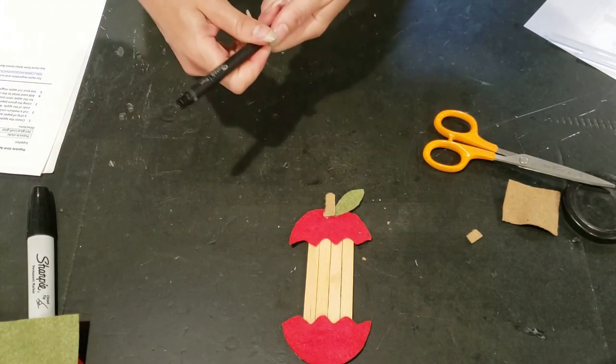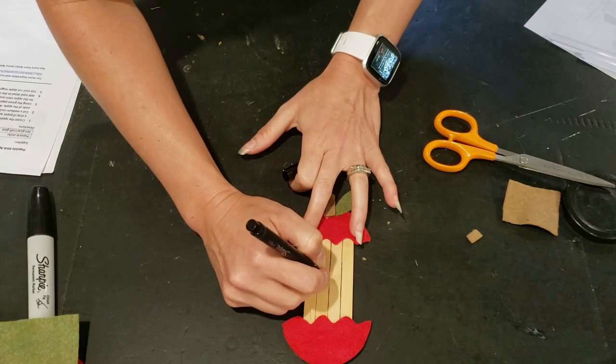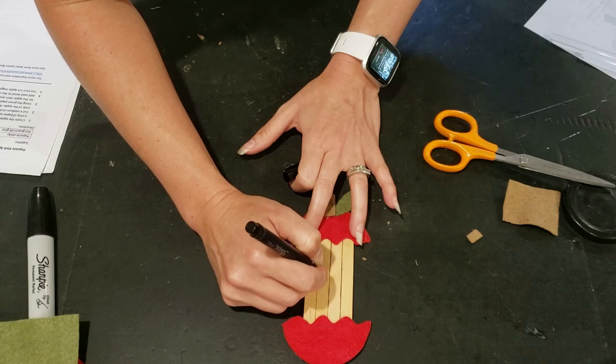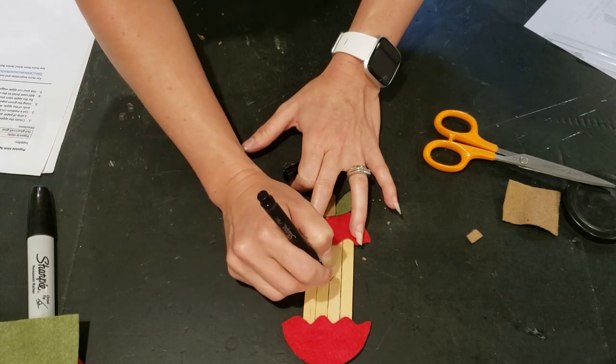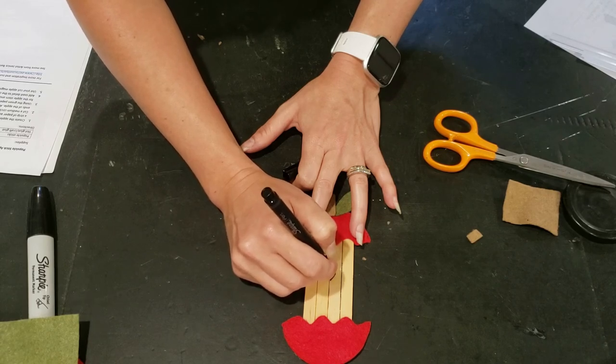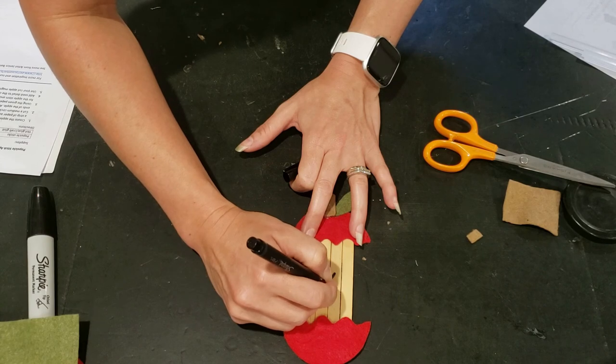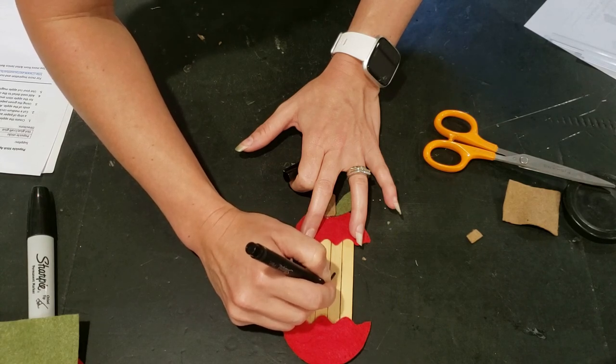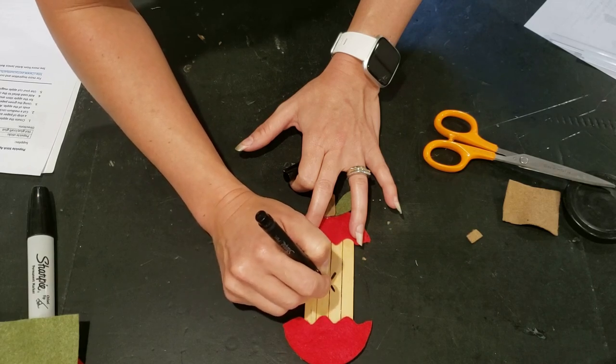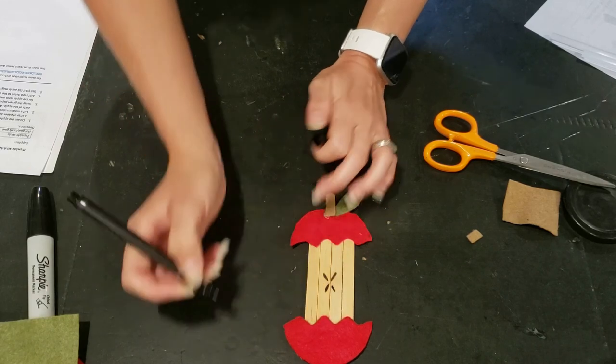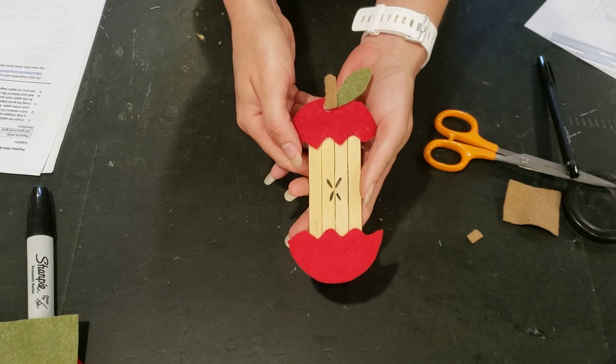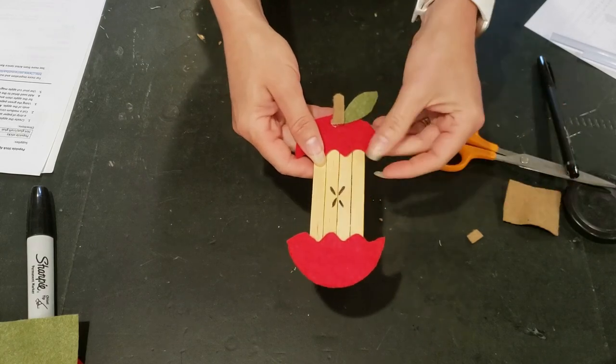And then we're going to add that on there, and then our final step is to take our marker and add some seeds, which are basically like raindrop shaped, right? So you can add as many seeds as you would like, but hopefully you didn't get too seedy of an apple. So I just add a few in the center. And there you have it, there is your fun fall themed apple core magnet. Thanks for joining me today, friends. Stay creative.